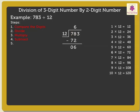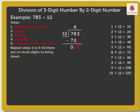Now, step 5 is to bring down the next digit, that is 3. After bringing down the digit, we repeat steps 1 to 5 till there are no more digits to bring down. So, we now compare 63 and 12. Here, 63 is greater than 12. So, we can divide 63 by 12.